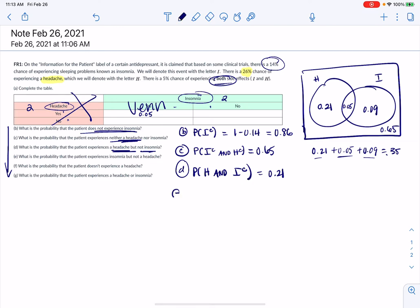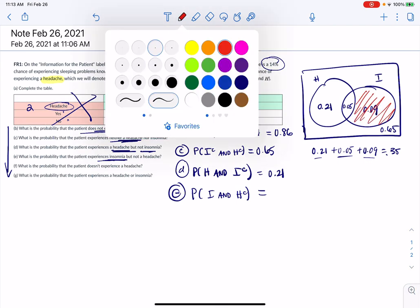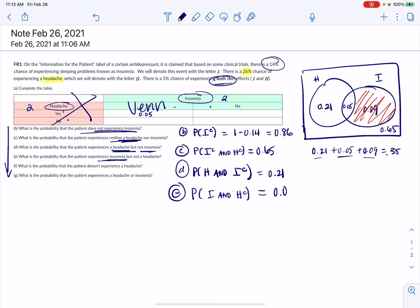Let's see what E says. What is the probability that you, oh, this is the other way, insomnia and not a headache. So now I have insomnia and not a headache. So if it's insomnia and not a headache, that's going to be over here. It's the right moon, so that's going to be 9%.